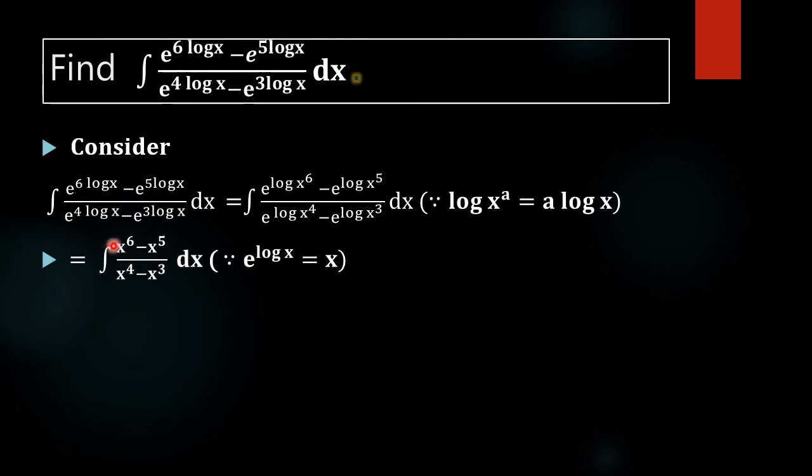We are going to simplify this numerator and denominator by taking x raised to 5 outside we will get x raised to 5 into x minus 1 and x cubed outside will give x minus 1 and we will cancel x minus 1 in the numerator and denominator.